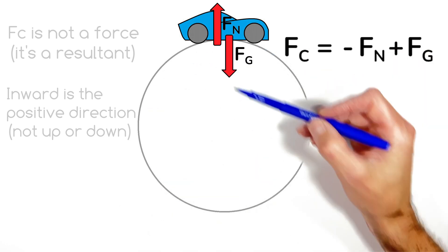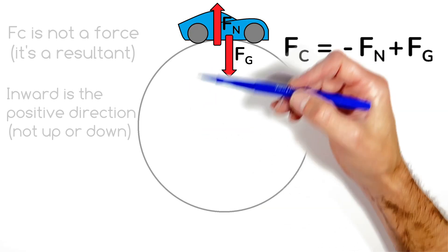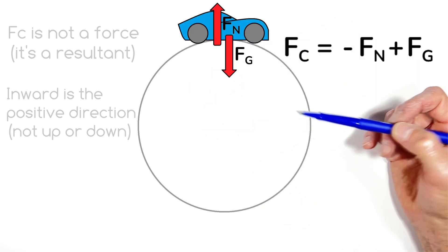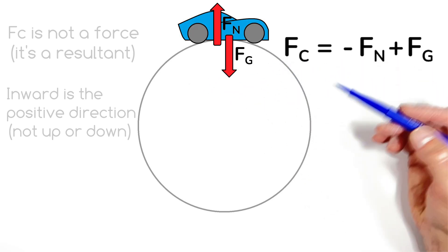And I know that's different from what we saw with the roller coaster going in a loop, but again, with a roller coaster, the car was on the inside of the track at the top of the loop, whereas for our car going over the top of a hill, the car is on the outside of the loop, and that changes the direction of the normal force.